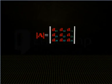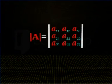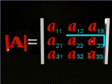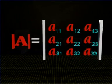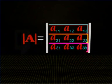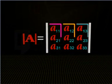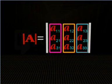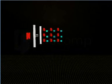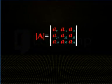Determinants of a matrix of order 3 can be obtained by expressing the determinant in terms of second order determinants. You can expand the determinant along each of the three rows and each of the three columns in terms of second order determinants. First, let's learn to expand the determinant along the first row.